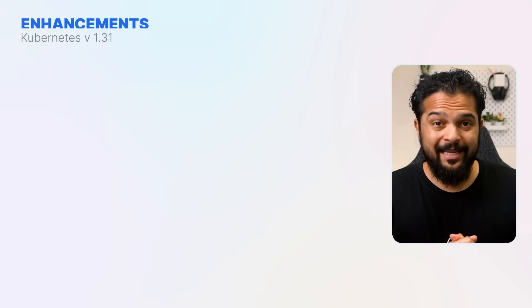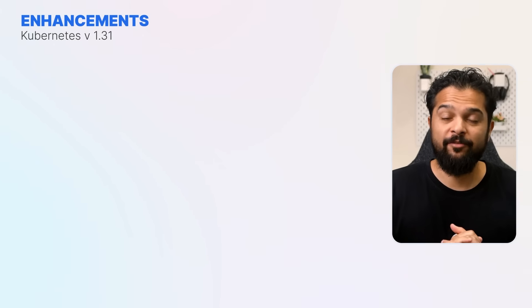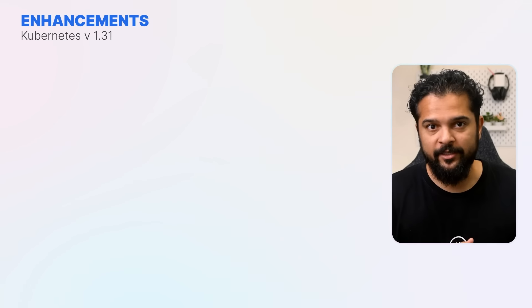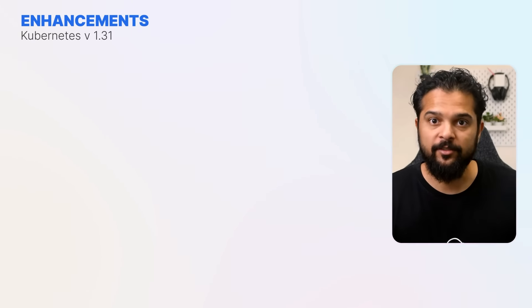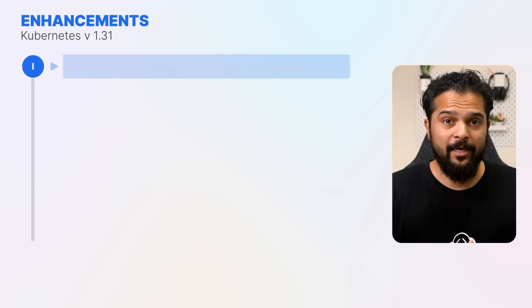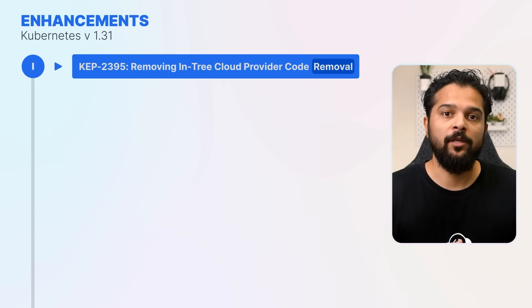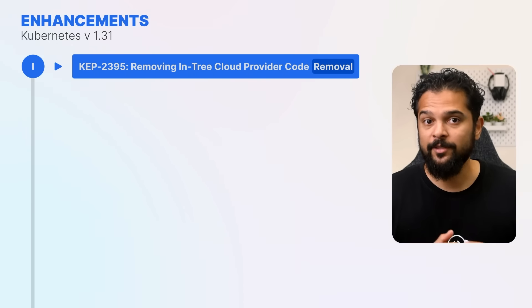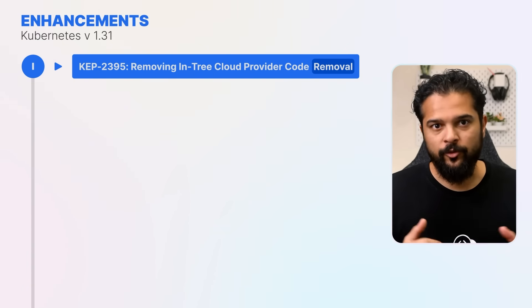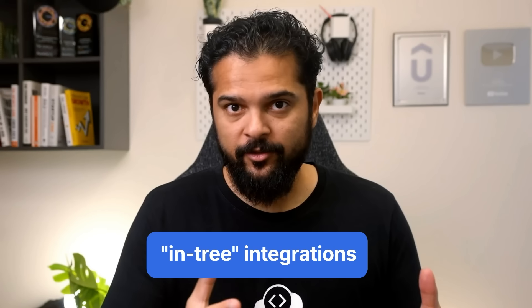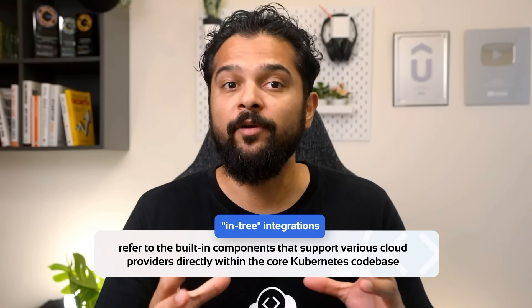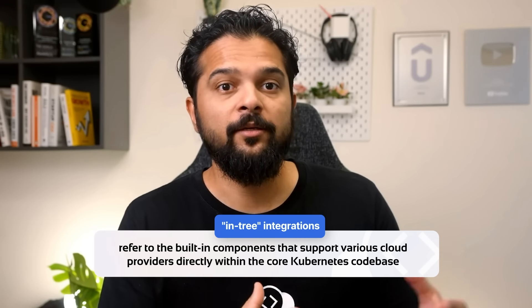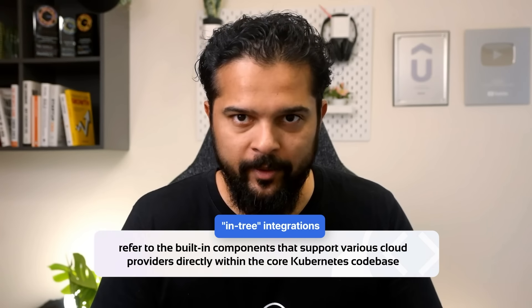We have selected five features that have received a lot of attention. Let's start with the most exciting change in this release. Kubernetes is now compatible with all cloud providers — or simply, Kubernetes goes cloud neutral. In Kubernetes, in-tree integrations refer to the built-in components that support various cloud providers directly within the core Kubernetes code base.